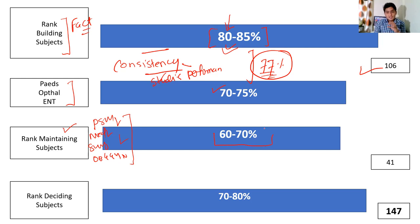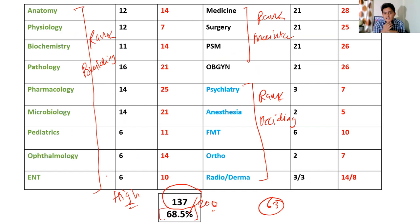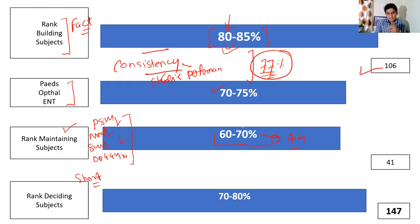For rank-deciding subjects - these are short subjects: psychiatry, anesthesia, FMT, ortho, radiology, and dermatology - again these are fact-based questions. The same questions are repeated with a twist or variation. If you revise your previous year questions, your rank-deciding subject accuracy will be more. Aim for at least 70 to 80% accuracy in rank-deciding subjects. You can accept a little lesser accuracy in rank-maintaining subjects, but rank-building subjects are where you have to work the maximum.